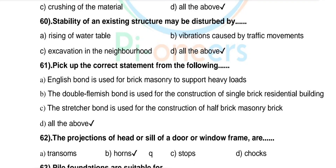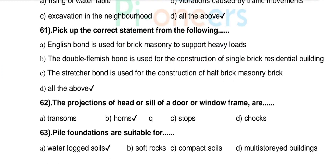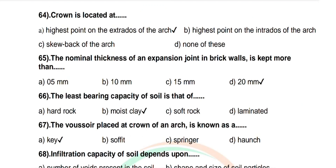Question 62: The projection of the head or sill of a door or window frame is called — options: transoms, horns, stops, chocks. Correct answer: horns. Question 63: Pile foundations are suitable for — options: water-logged soils, soft rocks, compact soils, multi-storied buildings. Correct answer: water-logged soils.